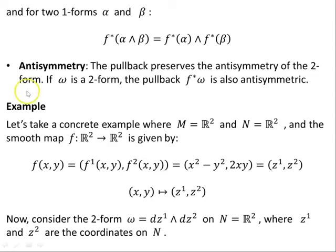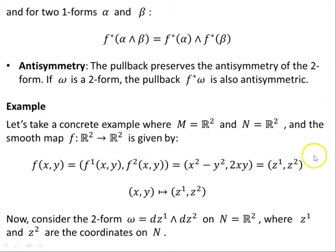Antisymmetry: the pullback preserves the antisymmetry of the two-form. If omega is a two-form, the pullback F*omega is also antisymmetric.